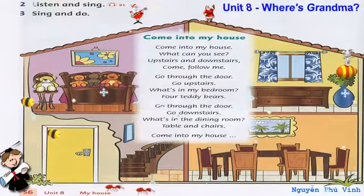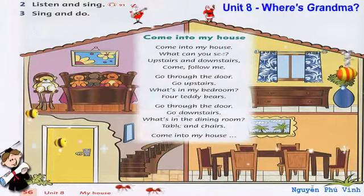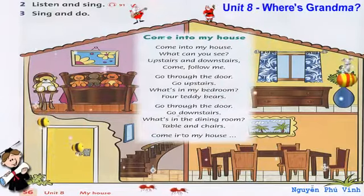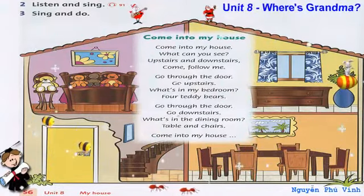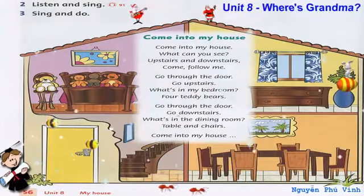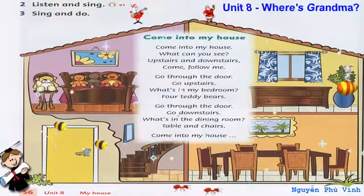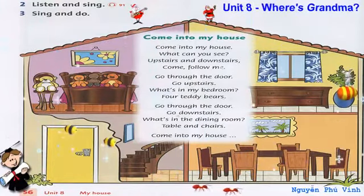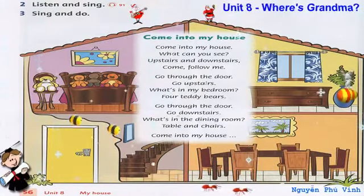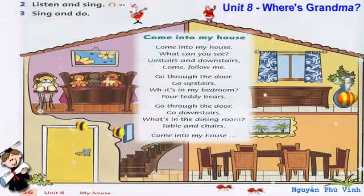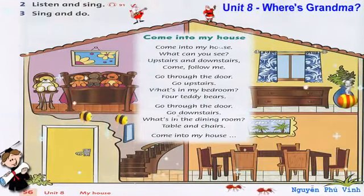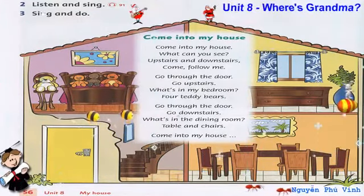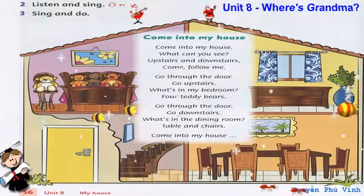Go through the door. Go upstairs. What's in my bedroom? Four teddy bears. Go through the door. Go downstairs. What's in the dining room? Table and chairs.